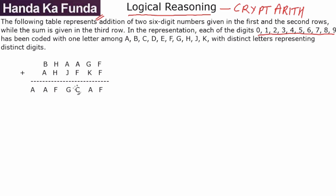In these kinds of questions, it is always easier to figure them out one by one. For example, if you want to figure out A, J and G, you can't really do that just by looking at it. But here, you can very easily figure out the value of A.